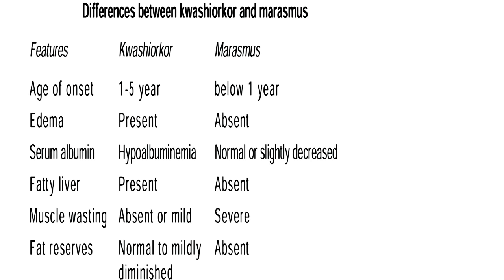These are the major differences between kwashiorkor and marasmus. Age of onset: in kwashiorkor it is 1 to 5 years, whereas marasmus is seen in infants below 1 year. Edema is present only in kwashiorkor but absent in marasmus. Albumin level is decreased in kwashiorkor — less than 2 grams per deciliter — whereas in marasmus it is slightly decreased or normal.